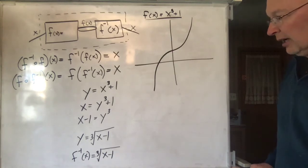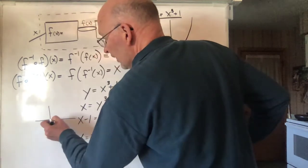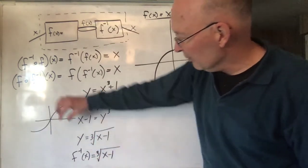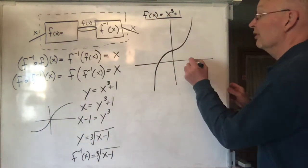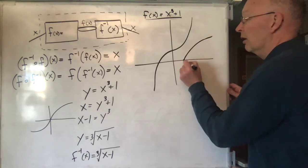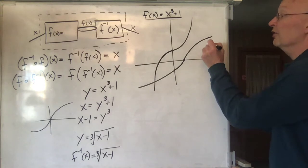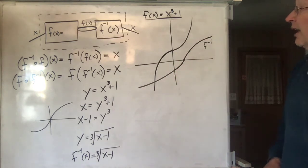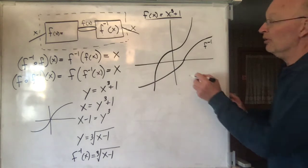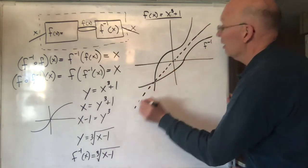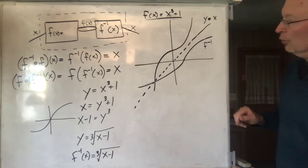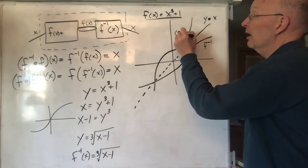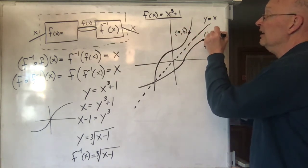If we were to graph that, what would it look like? The cubed root of X looks like this, and the cubed root of X minus 1 just shifts it over one unit. So this is F inverse — it looks something like that. Do you notice any special relationship between those two graphs? There's a symmetry: they are symmetric to the line Y equals X. That's true for any function and its inverse. Why? Because if the point (A, B) is on this graph, then the point (B, A) is on that graph.